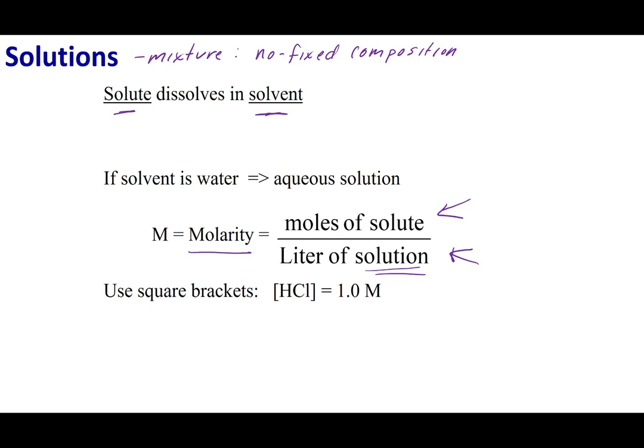Now to abbreviate molarity, what we're going to do is we're going to put our chemical compound in brackets. So the way that I would read this is I have HCl and I want the concentration of HCl. And in this case, I'm going to say that it is 1.0 M and M is the abbreviation for molarity. So what this means is I have 1.0 moles of HCl per liter of solution.